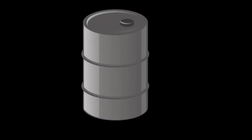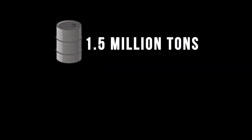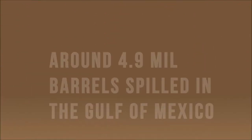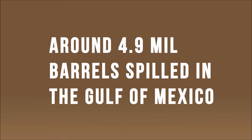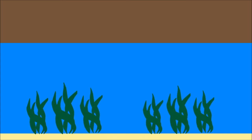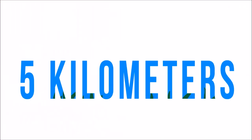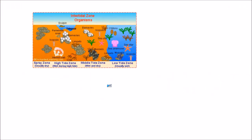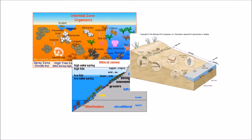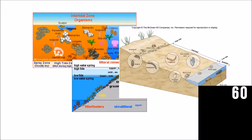This caused one of the largest oil spills ever recorded in history. Eight million barrels of oil, which is equal to around 1.5 million tons, oozed into the Gulf, which nearly doubles the amount of the BP oil spill. In the spill zone of the Gulf, the water's depth averaged around five meters, sometimes stretching for five kilometers wide.